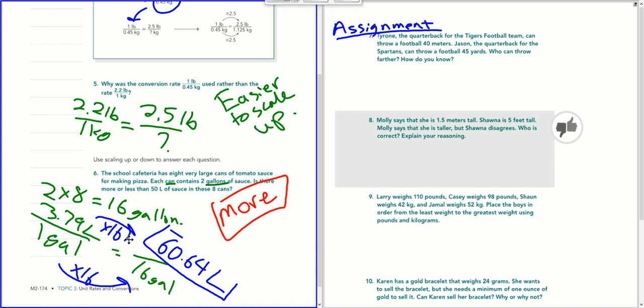But 16 gallons has to go across from the one gallon because that's how many gallons I have in these eight cans. And then I multiply by 16. So do that to the top. 16 times 3.79 would be 60.64 liters.